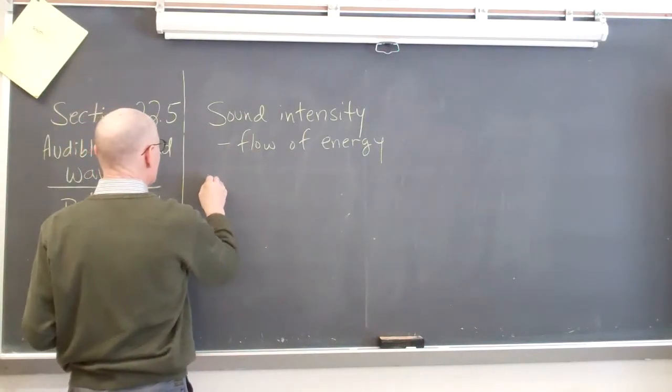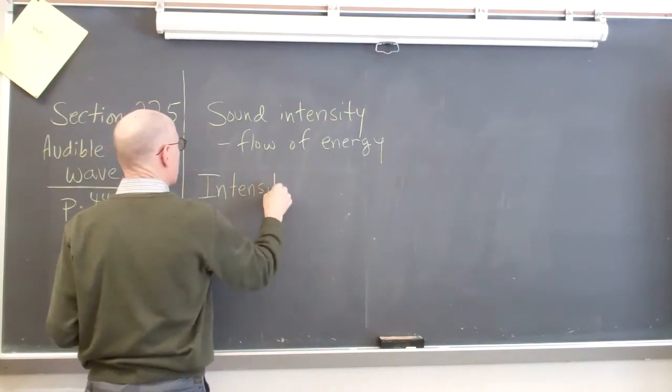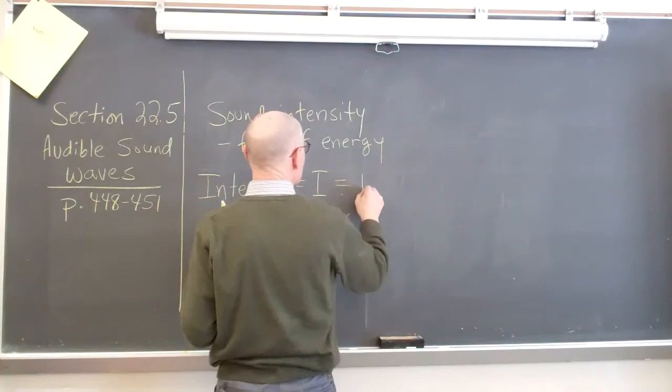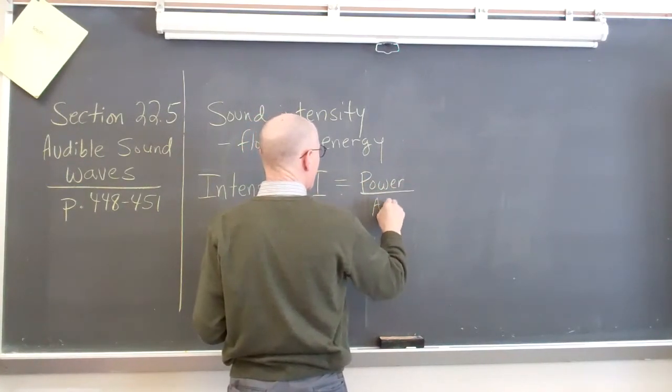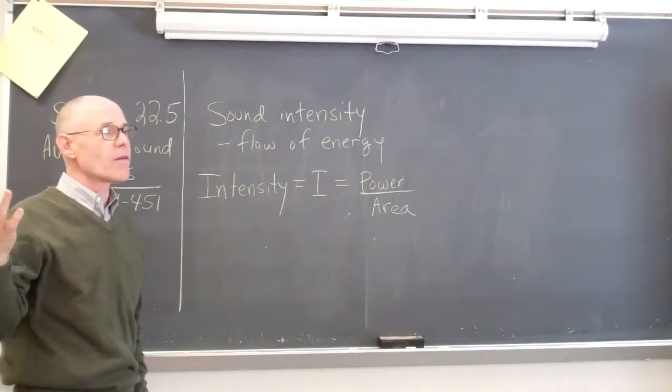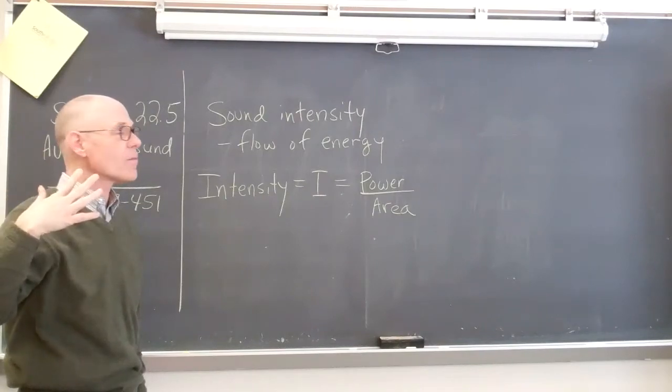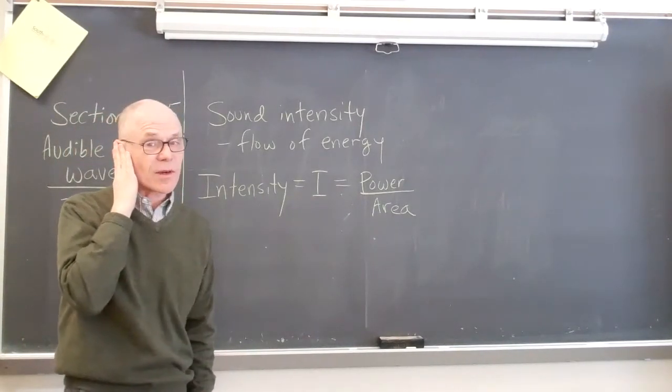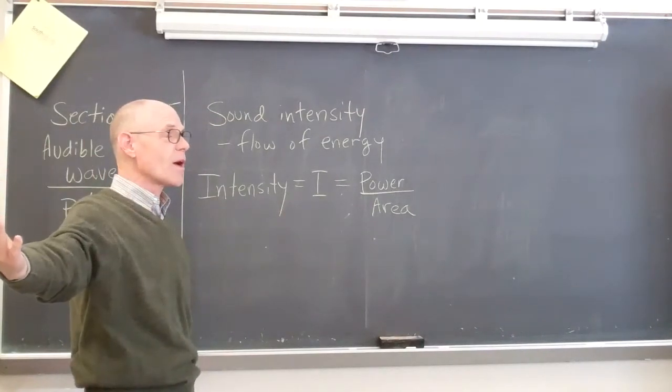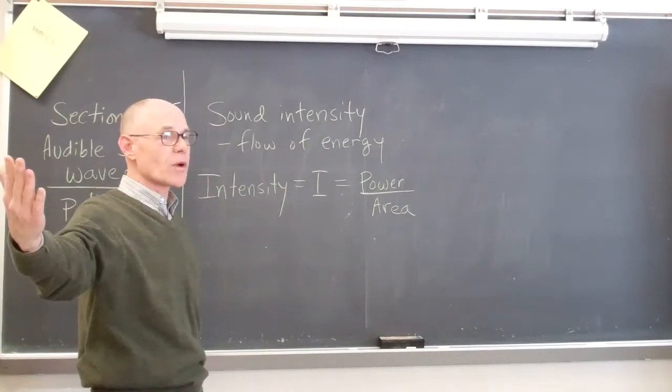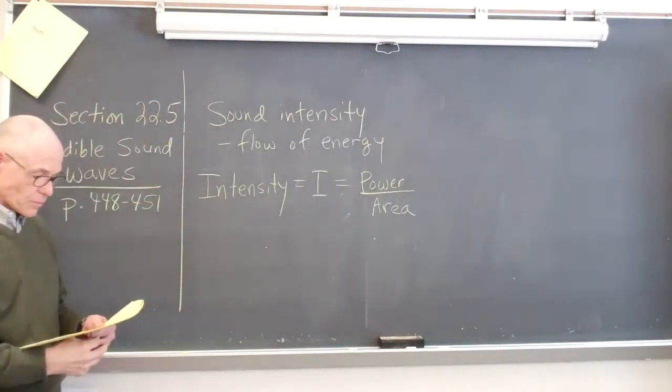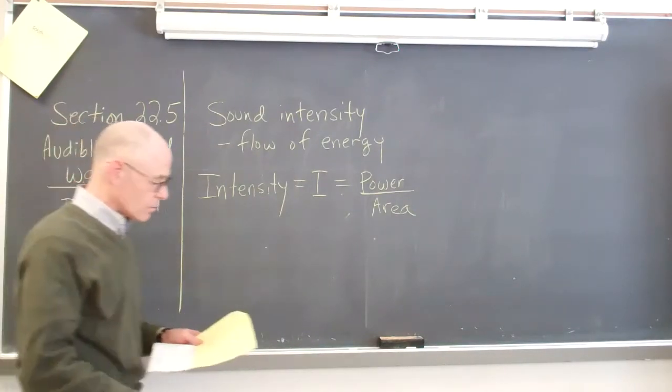So, we're going to define intensity, and we will abbreviate it with a capital I, and that is equal to power divided by area. Power is really going to be a measure of how quickly that energy is flowing through the air, and that area we're talking about is, for instance, when we hear a sound, we're hearing it at this area right around our ear. You're really talking about energy being quickly or not quickly being transferred through the air and impacting your ear over this small area.